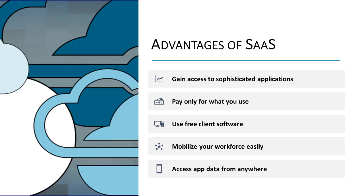When leveraging Software-as-a-Service, an organization only pays for what it uses. It saves money because the Software-as-a-Service service automatically scales up and down based on the level of usage. An organization's users can run most Software-as-a-Service applications directly from their browsers without the need to download and install any software, although some applications may require plugins, meaning organizations typically don't need to purchase and install any special software for their users.